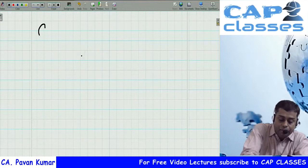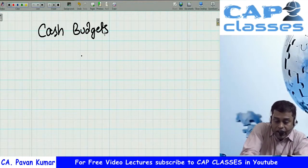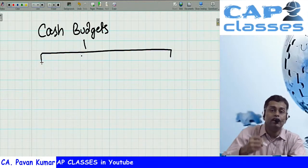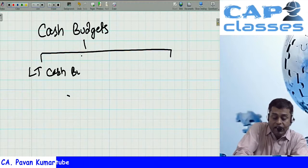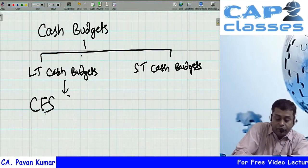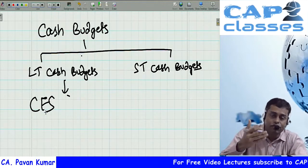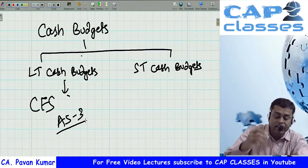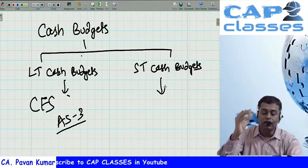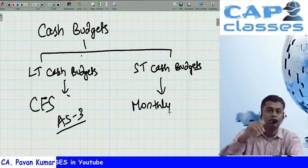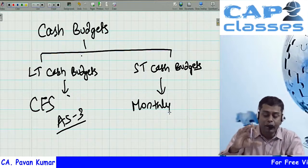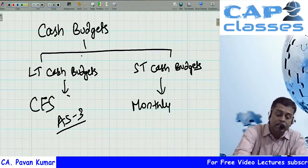Category three also includes cash budgets. Cash budgets are broadly classified into long-term and short-term. Long-term cash budgets are essentially cash flow statements prepared for the next three to five years, covered under Accounting Standard 3. In financial management, we emphasize short-term cash budgets — for example, monthly cash budgets from April to June, as typically asked in exams.